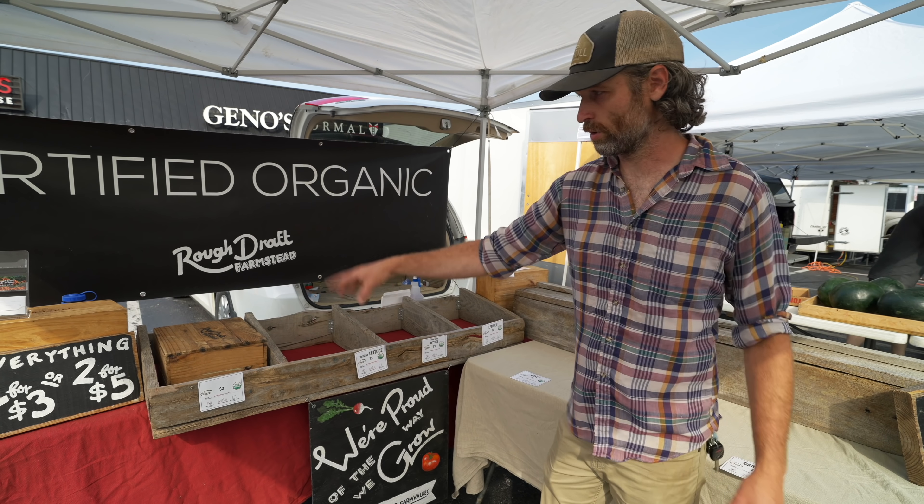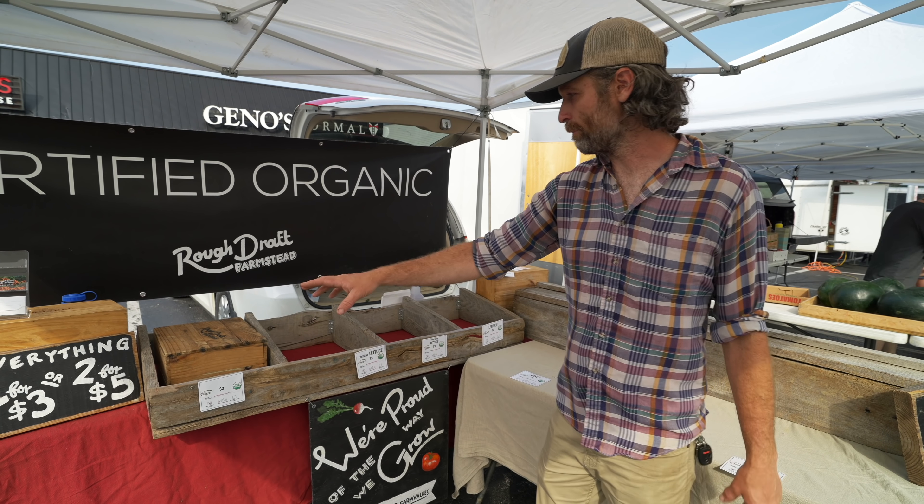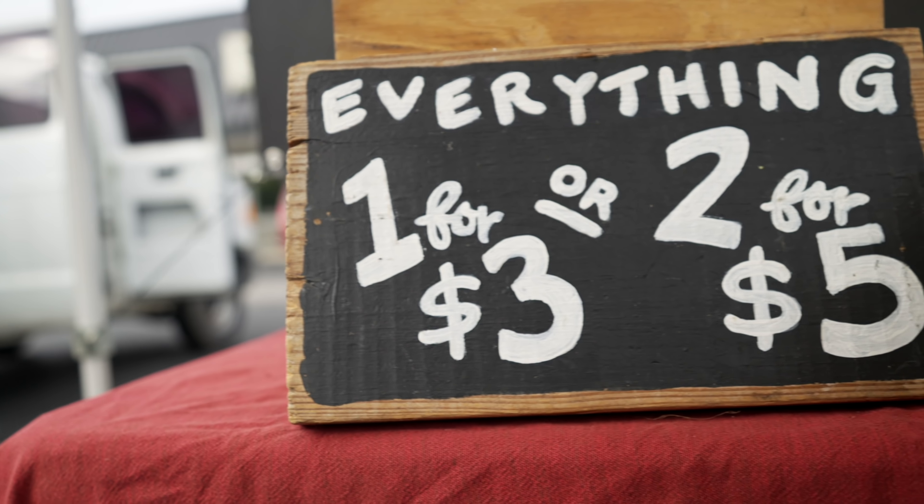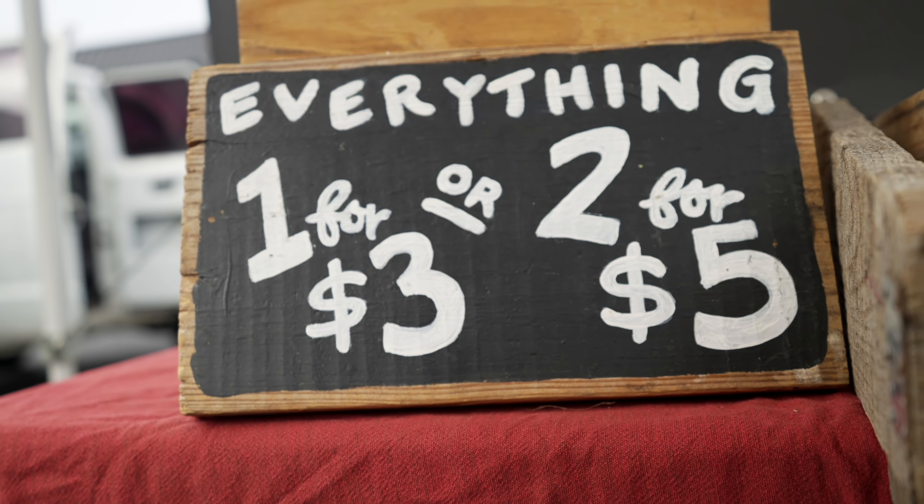In terms of pricing models at farmer's markets, one that works really well — as I saw when I visited Jesse — is selling everything for $3 or two for $5. A lot of people have taken on this model for farmer's markets. You pack everything in sizes that make sense for those prices, and it makes the math work very quickly for interactions at a farmer's market.